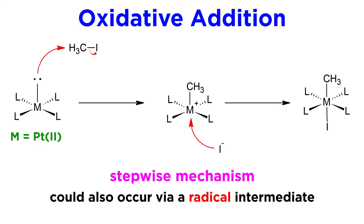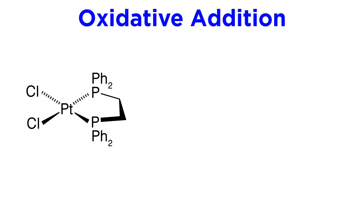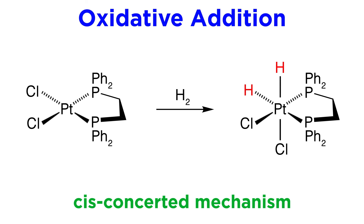We must however be aware of electron count, because the metal may or may not be able to accommodate the additional ligand. With the basic concept understood, let's take a look at some examples. Here is a square planar platinum complex with a bidentate diphosphine and two chloride ligands. If this reacts with molecular hydrogen, it is quite easy to draw the product. Since the two hydrogens must end up cis to one another, one of these chloride ligands gets pushed to one side, and this is what we get. There are no other possible products.